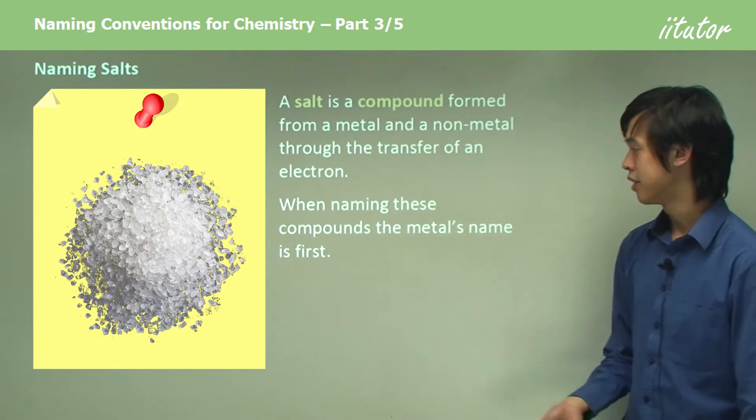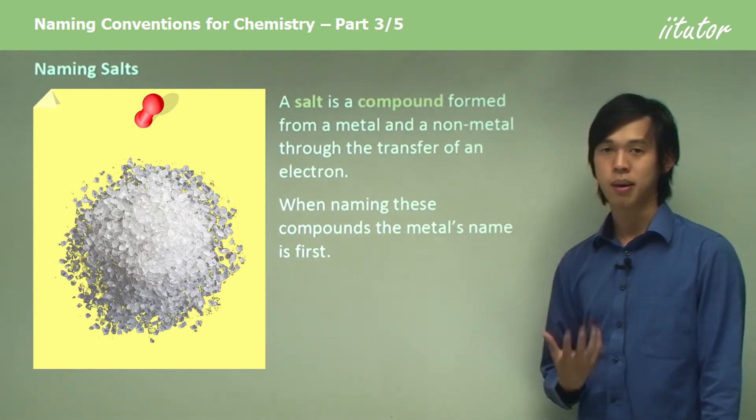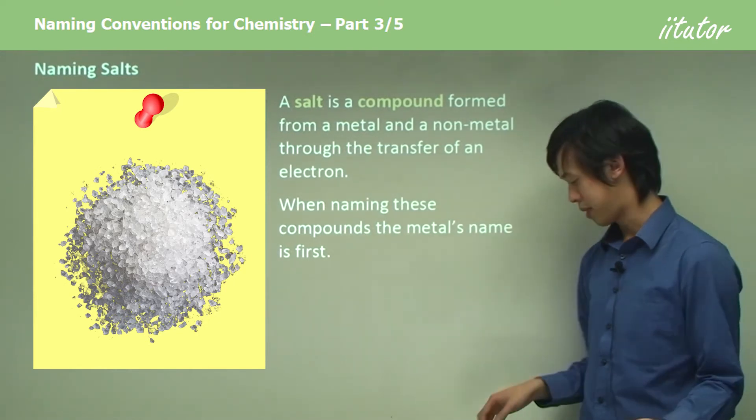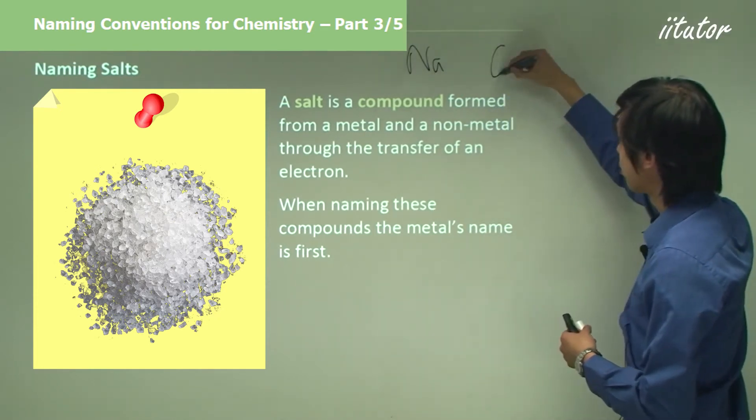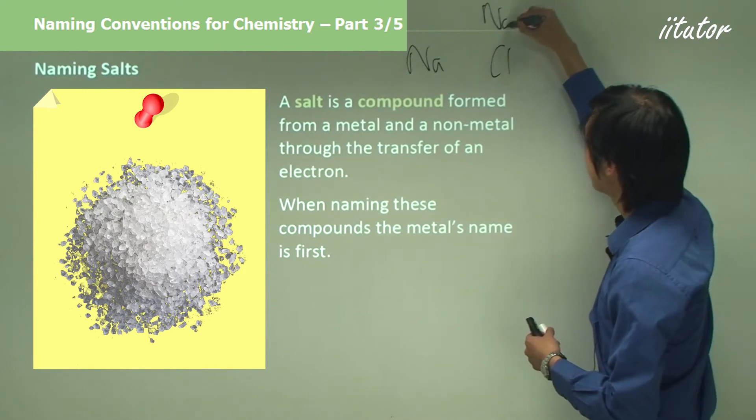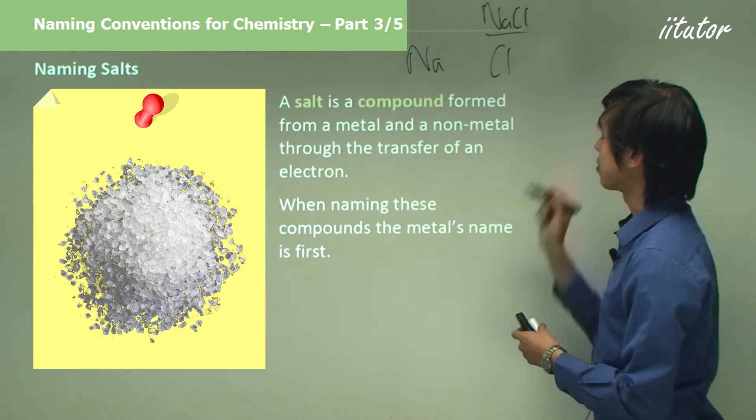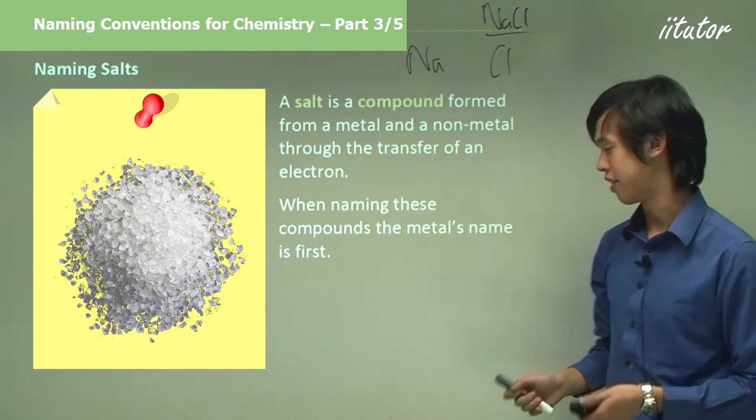So, when naming a salt, the metal's name comes first. Okay, so if I was mixing sodium with chlorine, we get NaCl, and to name this we'd call it sodium chloride.